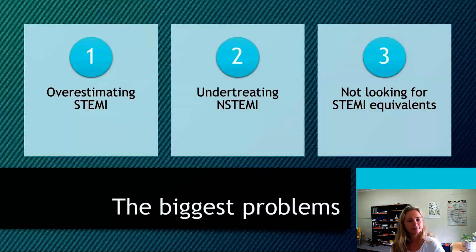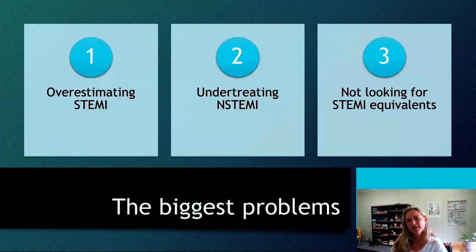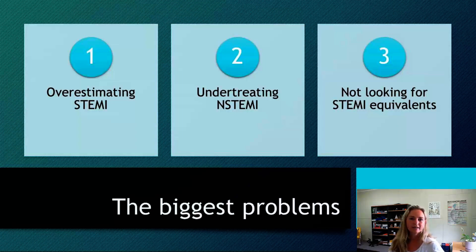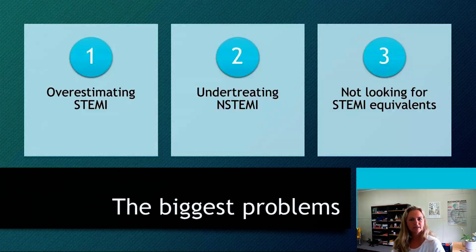Our three biggest problems: first, we overestimate STEMIs — we often call things with ST elevation a STEMI when they're not. Second, we're not well trained at recognizing things other than STEMI that cause ST elevation. Third, we're under-treating non-STEMI — not recognizing patients potentially having an infarct that doesn't show as ST elevation. And fourth, we're not looking for STEMI equivalents — patterns recognizable as myocardial infarction that we're simply not identifying.